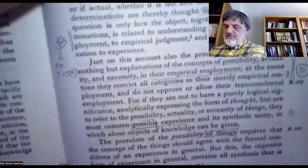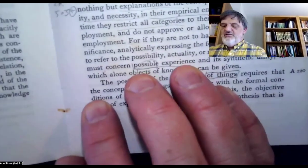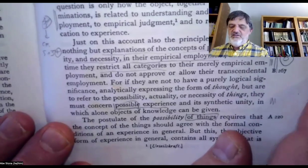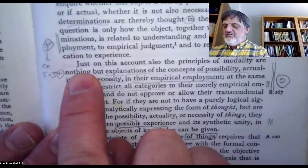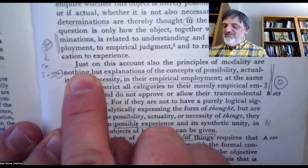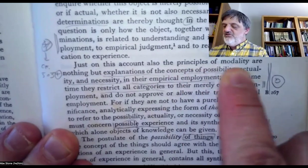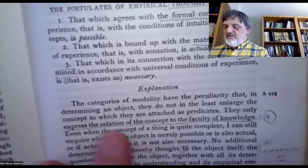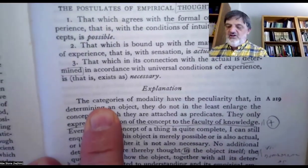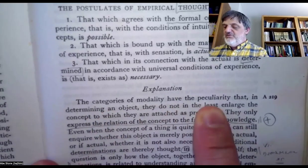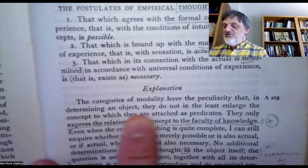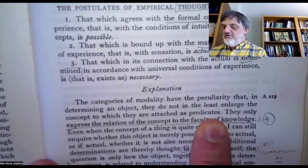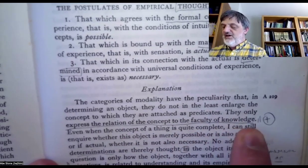Kant says the postulates don't exactly have proofs — they have what he calls an explanation. Just on this account, the principles of modality are nothing but explanations of the concepts of possibility, actuality, and necessity in their empirical employment. The categories of modality have the peculiarity that in determining an object, they do not in the least enlarge the concept to which they are attached as predicates. They only express the relation of the concept to the faculty of knowledge.